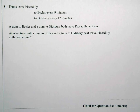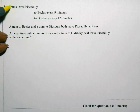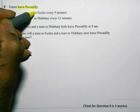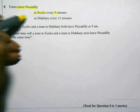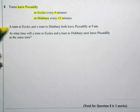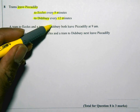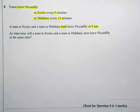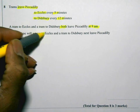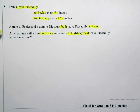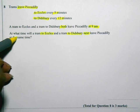Here's question 8 on the higher non-calculator paper. Let's read this question first. Trams leave Piccadilly to go to Eccles every nine minutes and to Didsbury every 12 minutes. A tram to Eccles and a tram to Didsbury both leave Piccadilly station at 9 a.m. At what time will a tram to Eccles and a tram to Didsbury next leave Piccadilly at the same time?